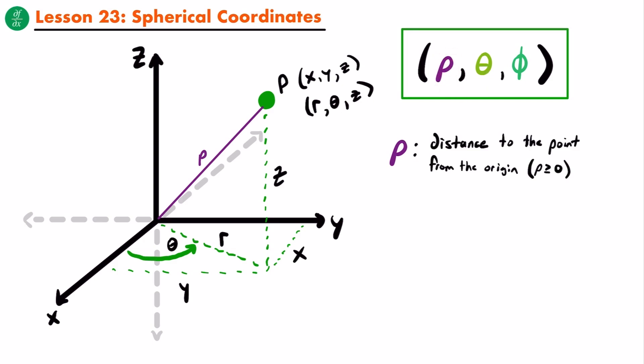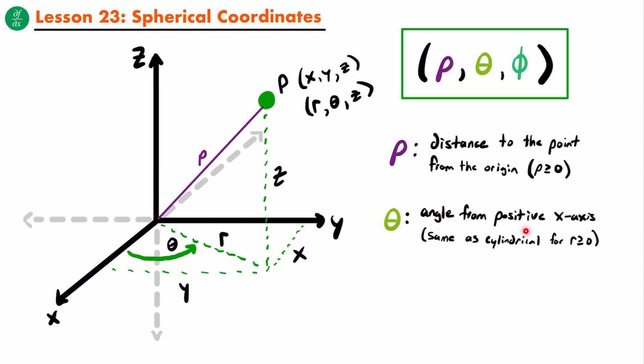The second coordinate is theta, and theta is exactly the same here as it was in cylindrical coordinates. Theta is just the angle from the positive x-axis — the same as cylindrical for values of the radius greater than or equal to zero. You measure an angle from the x-axis, and if you think about a plane cutting through that angle in a 3D coordinate system, within that plane that cuts through that angle, the point would be contained somewhere within that plane.